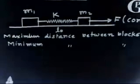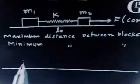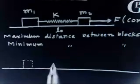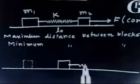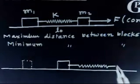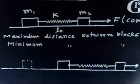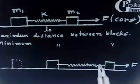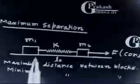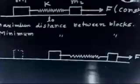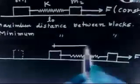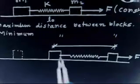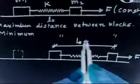Let us proceed. Initially block 1 was at some position. Let us say block 1 has moved by some distance — now block 1 is here. There is a spring that has also stretched by some distance, and force F is acting. If the spring has stretched by distance X, then the distance between the two blocks will be L0 plus X, since the initial length is L0.